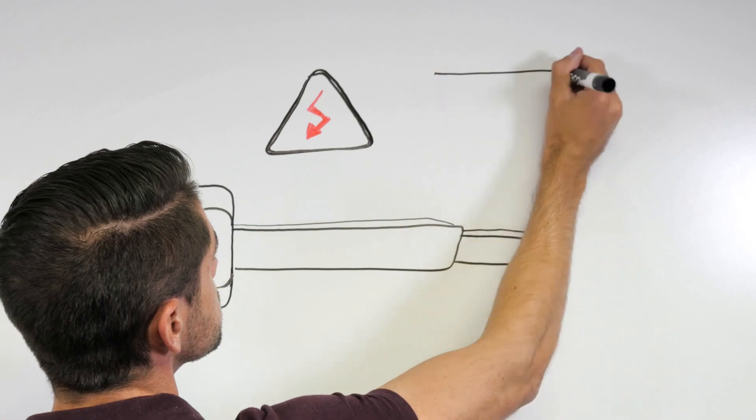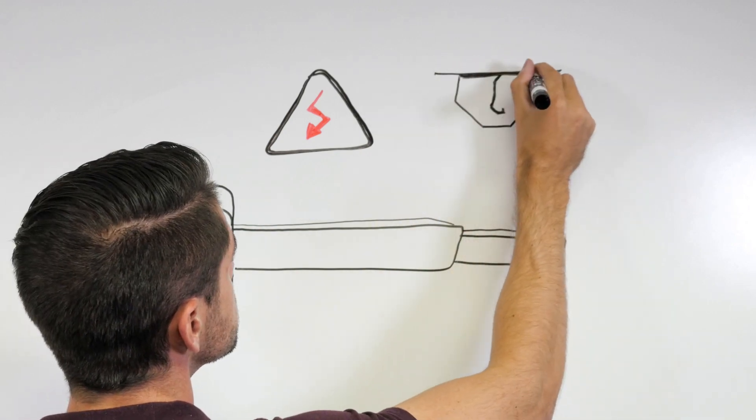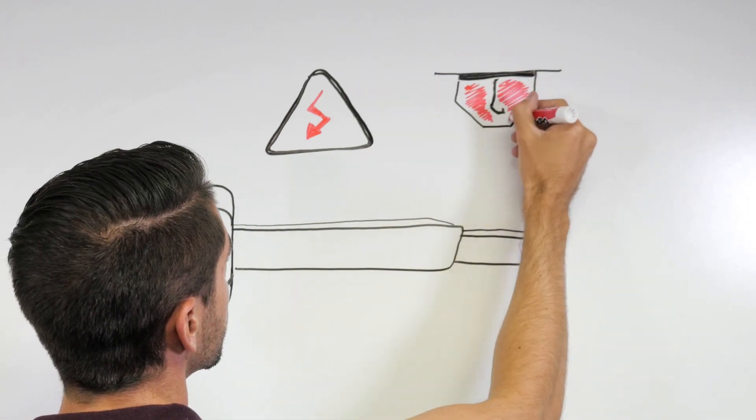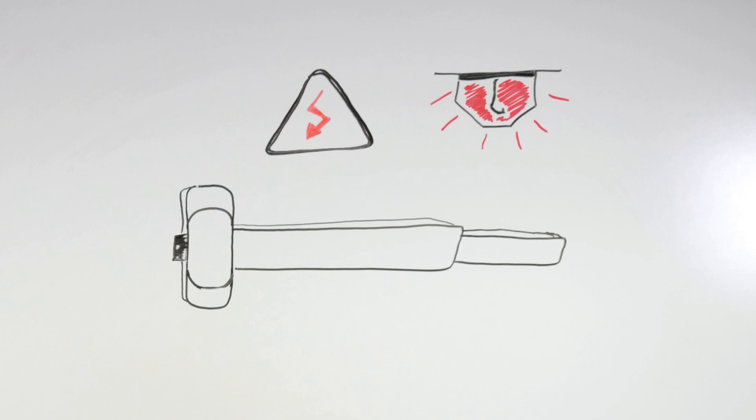Electric latch retraction devices can be used on fire-rated openings when they are tied to the fire alarm system. Remember, fire-rated openings require positive latching to slow the spread of smoke and fire. The trigger of the alarm will prompt power to be removed from the devices, so the latches will then extend and engage with their strikes.